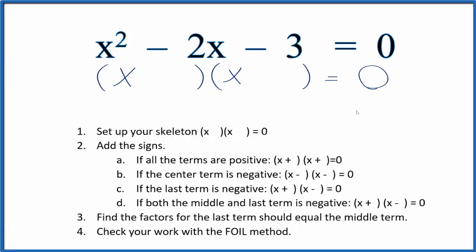Then we can add the signs in. If we have a negative and a negative, so the middle and the last term those are negative. If both the middle and the last term are negative we'll have a positive and a negative sign here. Let's put those in, plus and minus.